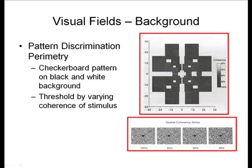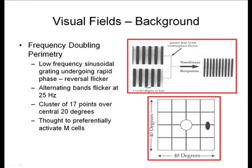Pattern discrimination perimetry uses a checkerboard pattern on a black and white background, and the threshold is measured by varying the coherence of the stimulus. You can see in the bottom image the various stimuli in the upper quadrant and how it can be difficult to detect. This is done more for research purposes.